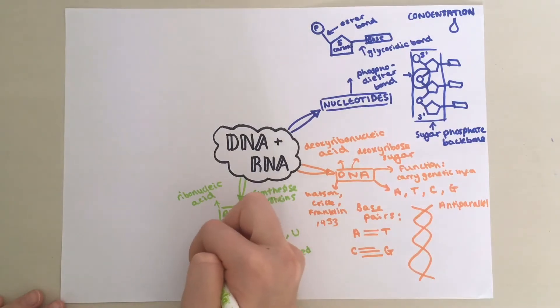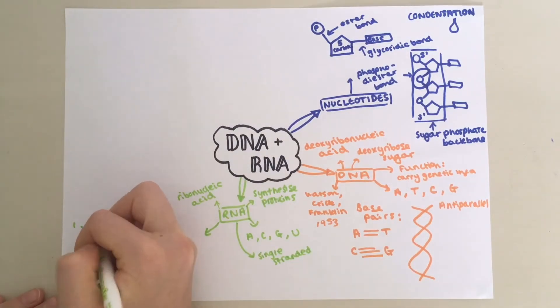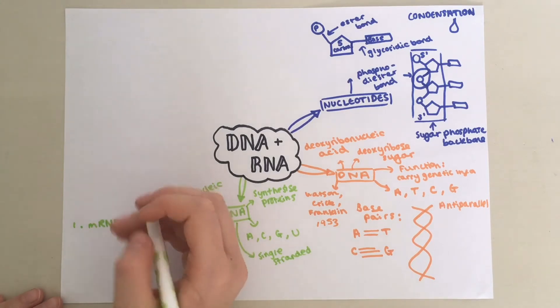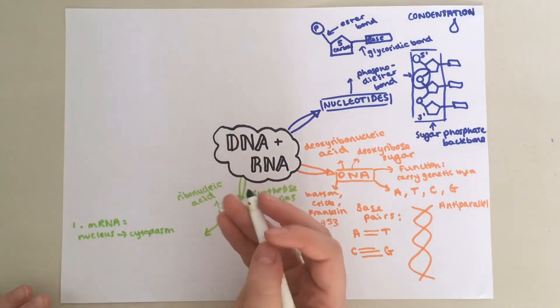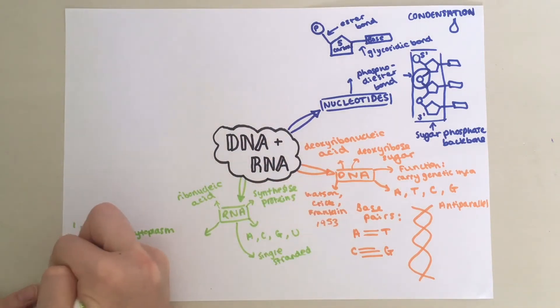There are three different types of RNA. Firstly, you have messenger RNA, mRNA. This basically brings information from DNA in the nucleus to the ribosomes in the cytoplasm, therefore directing the synthesis of proteins.